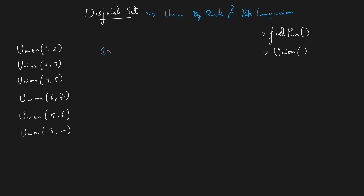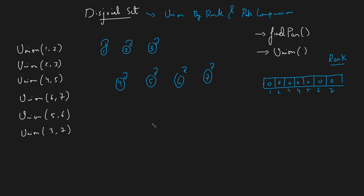The efficient implementation of disjoint set is done by union by rank and path compression. We maintain a parent array where every node has itself as its own parent when we start. We also maintain a rank array which stores the rank of all nodes, and the initial rank of everyone is zero.